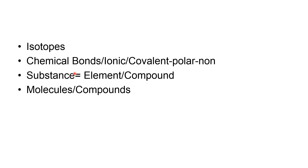Substances can be elements, compounds, or molecules. Elements are matters made up of the same type of atoms. Compounds are made up of different types of atoms. Molecules are made up of the same type of atoms held together by a chemical bond, while compounds are made up of different types of elements with atoms held by bonds.